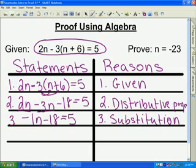Now, continuing on, to get the variable by itself, we would add 18 to both sides, in which case we're left with negative 1n is equal to 23. Since we added 18 to both sides, the addition property.